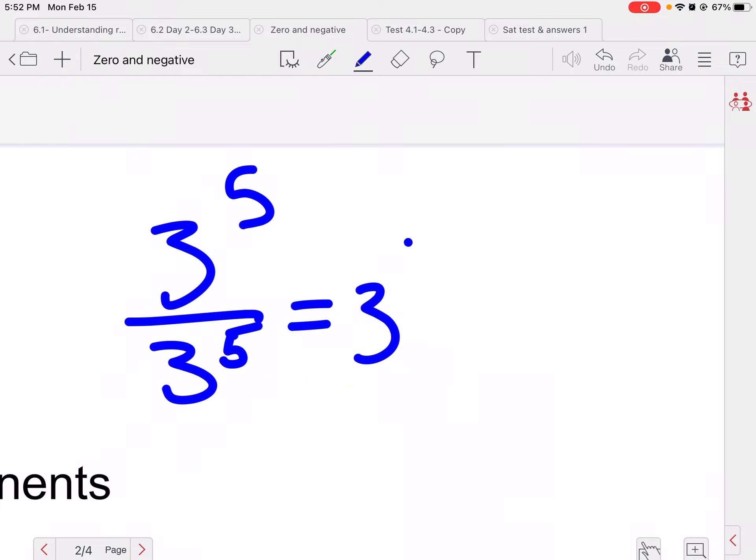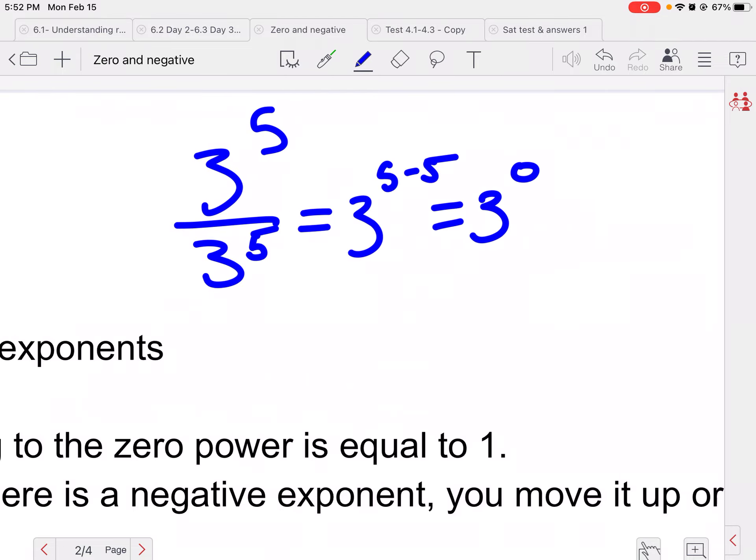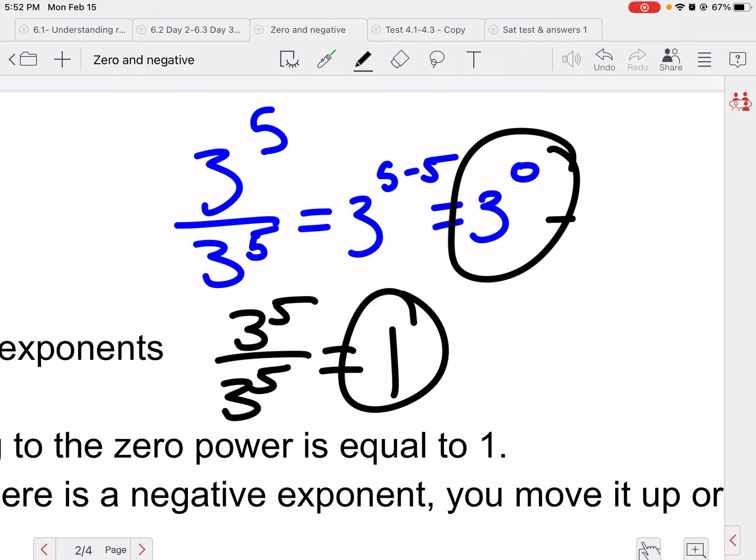I'm going to show you why that works. So remember way back when, which was yesterday's video, if I had 3 to the fifth over 3 to the fifth, we agree that five minus five is zero. So this becomes 3 to the zero. Now if we didn't have the quotient rule, if we didn't know what that was yet, we know that 3 to the fifth over 3 to the fifth is one, because we know anything over itself is one.